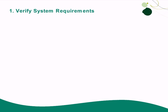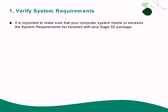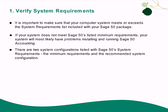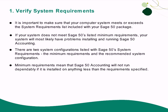Before preparing for an actual installation, it is very important that you make sure that your computer meets or exceeds the system requirements list included with your SAGE50 package. If your system does not meet SAGE50's listed minimum requirements, your system will most likely have problems installing and/or running SAGE50 accounting in terms of performance and stability. There are two system configurations listed with SAGE50's system requirements: the minimum requirements and the recommended system configuration. Minimum requirements mean that SAGE50 accounting will not run dependably if it is installed on anything less than the requirements specified.